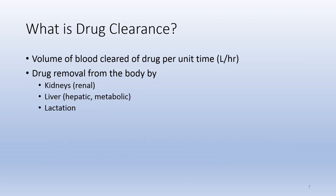What is drug clearance? The volume of blood cleared of drug per unit time, generally liters per hour, is the drug clearance. Drug removal from the body is by the kidneys or renal elimination, liver or hepatic and metabolic elimination, and also through breast milk via lactation.